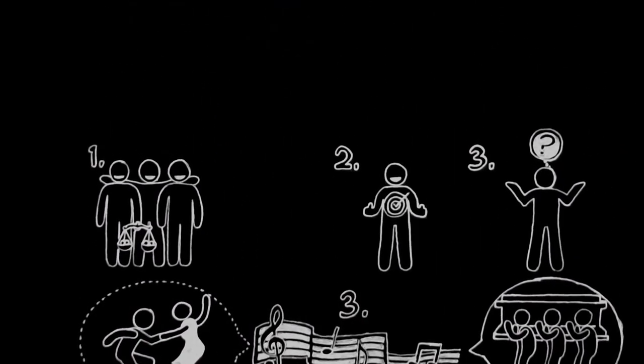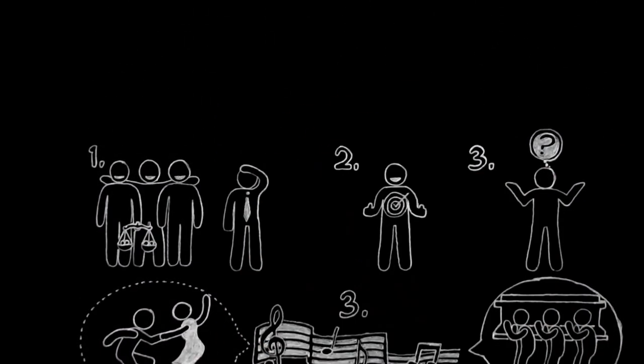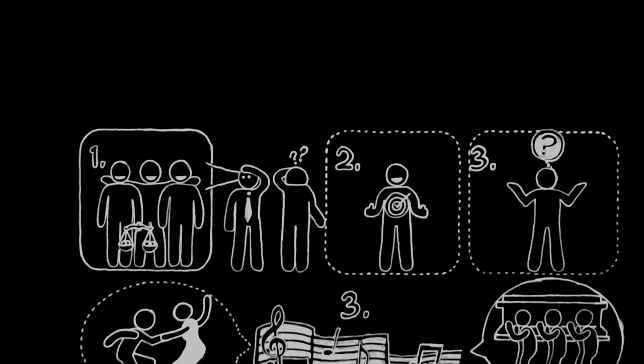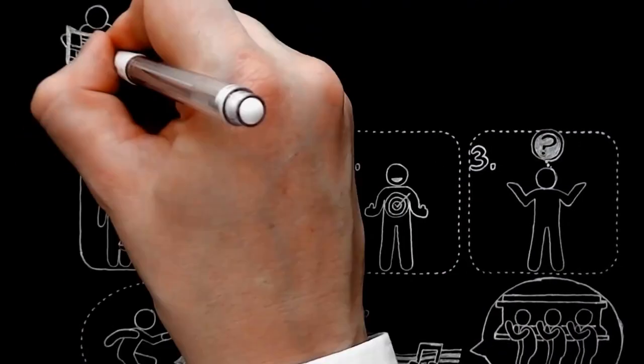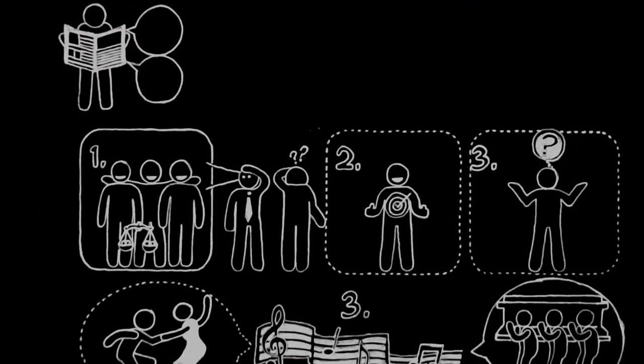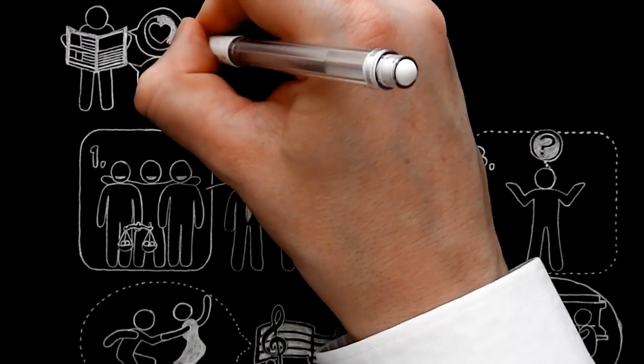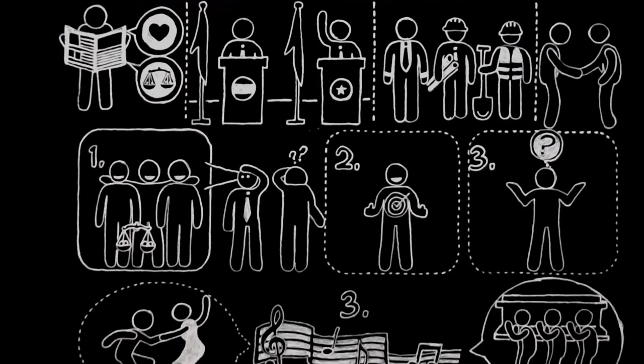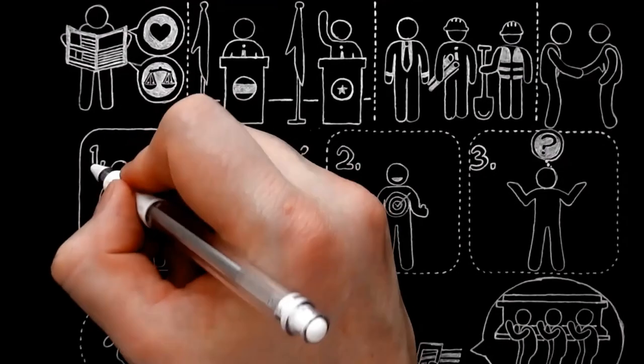You may have noticed that modern people are nearly always thinking about the first thing and forgetting the other two. When people say in the newspapers that we are striving for Christian moral standards, they usually mean that we are striving for kindness and fair play between nations and classes and individuals. That is, they are thinking only of the first thing.